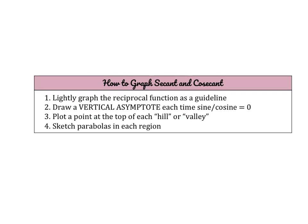Here's how I like to go about graphing secant and cosecant. I actually start by graphing the reciprocal function — either sine or cosine first — doing that really lightly as a guideline. Then I look at my reciprocal function graph and draw a vertical asymptote every time the sine or cosine graph is equal to 0, so anytime it's crossing our midline. Then I plot a point at each hill or valley of sine or cosine, because those are the times when sine and cosine equal 1, and the reciprocal is also 1. Then we sketch a parabola in each region — some going up, some going down.